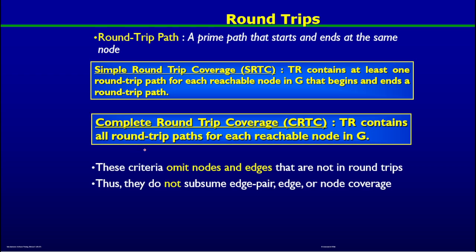There are three more interesting concepts about prime paths. One more definition is a round trip path: it is a prime path that starts and ends at the same node. A round trip path is a simple path, and it is a special prime path that always begins and ends at the same node. This gives rise to two coverage criteria: simple round trip coverage and complete round trip coverage.